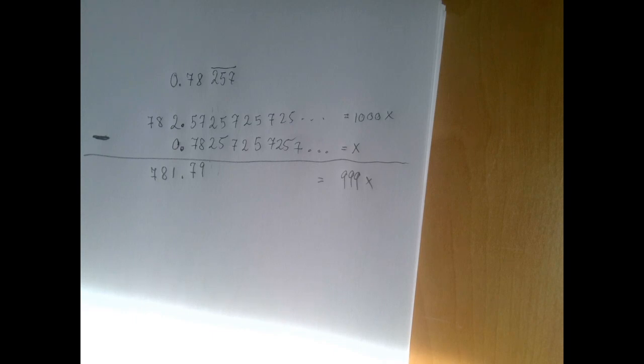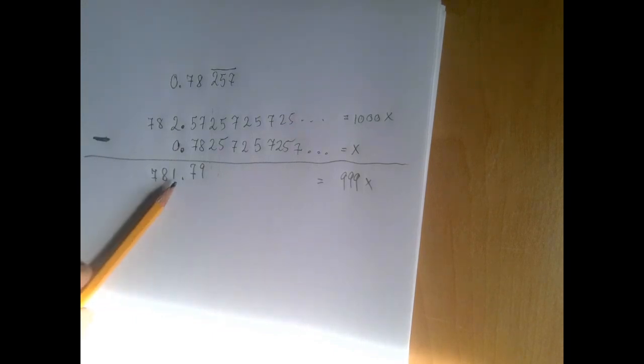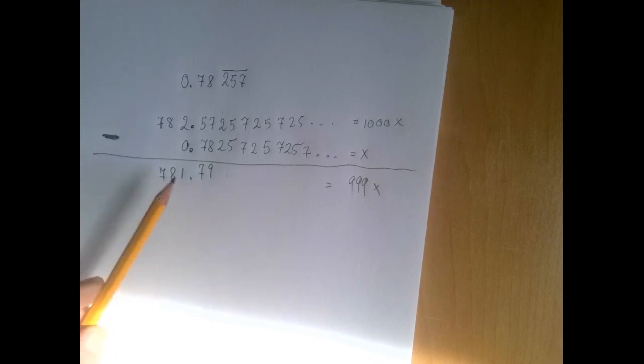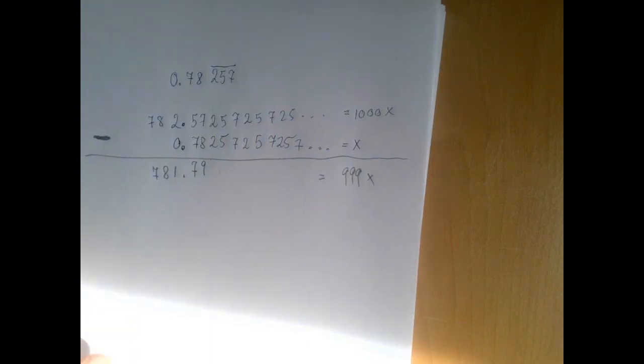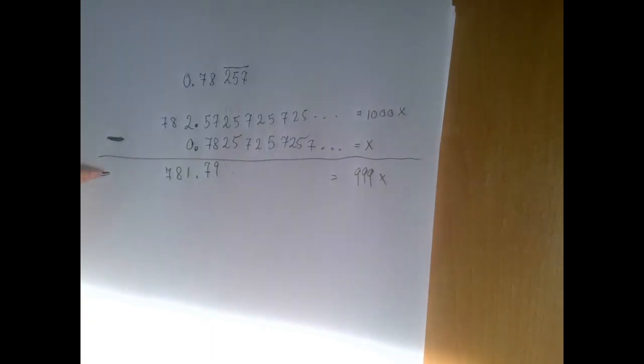Again, a suitable 10 power. This time, we have to ask, okay, how many decimals do I need to move this decimal point to the end? In this case, 2, that means put two zeros after the 1. So we're going to multiply both sides of this equation by 100.